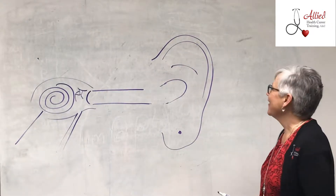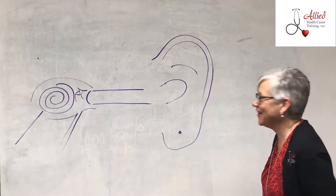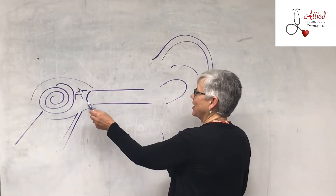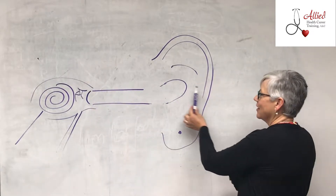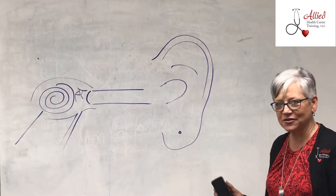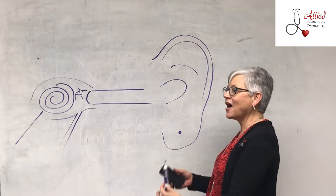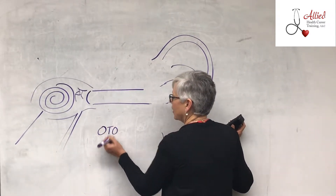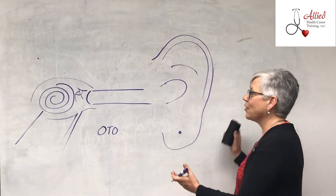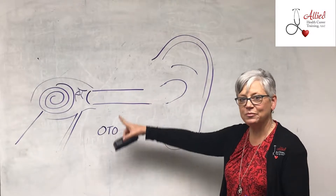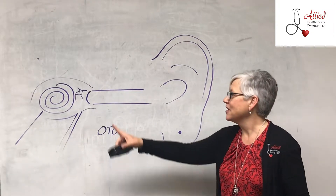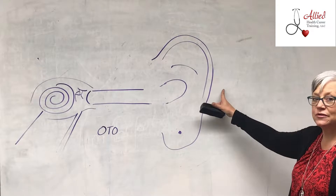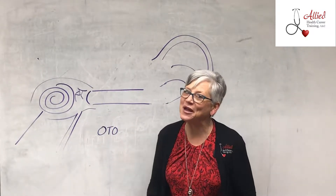Let's talk about the ear a little bit. So, nice drawing! This is otitis externa — everything from here to the tympanic membrane, also known as the eardrum, is considered externa, the external part of the ear. Oto of course means ear, so otitis would be inflammation or infection of the ear. Otitis externa is an infection from the tympanic membrane outward.